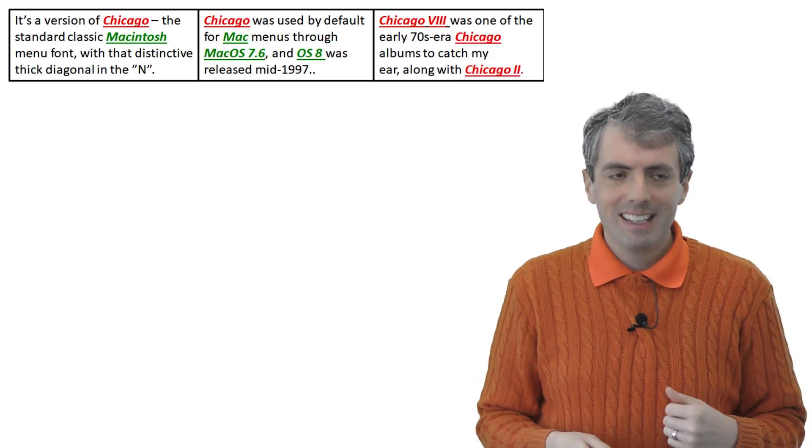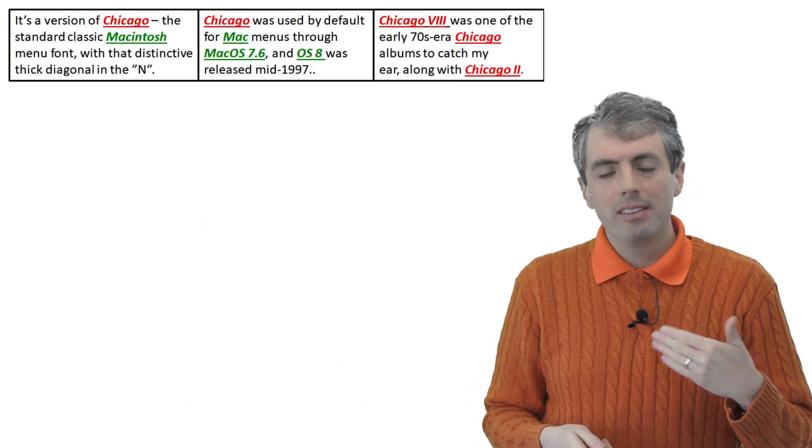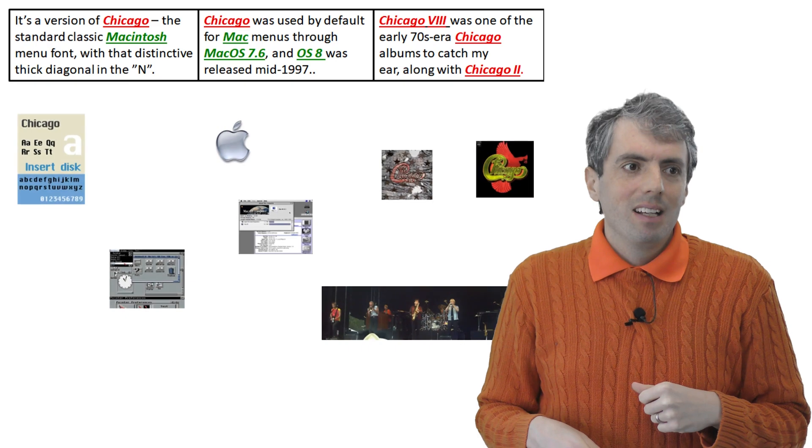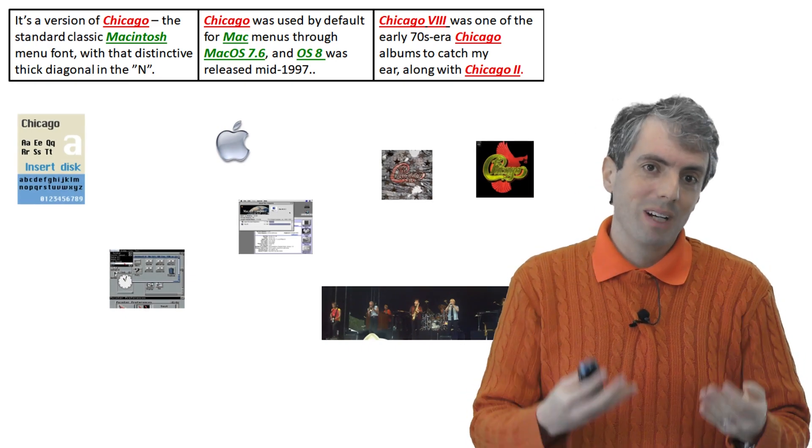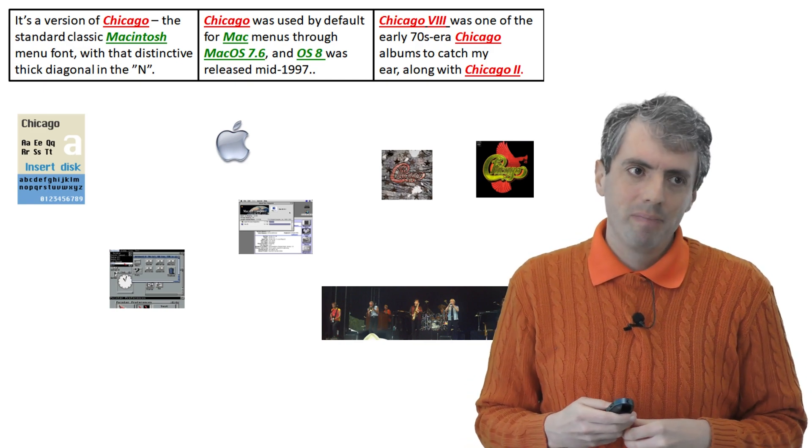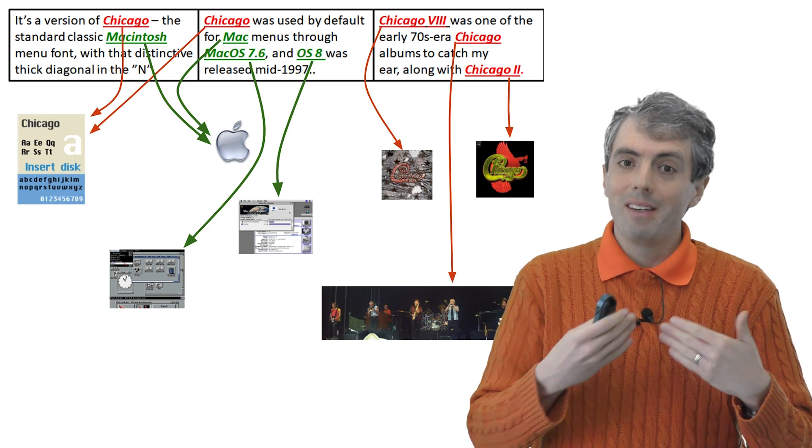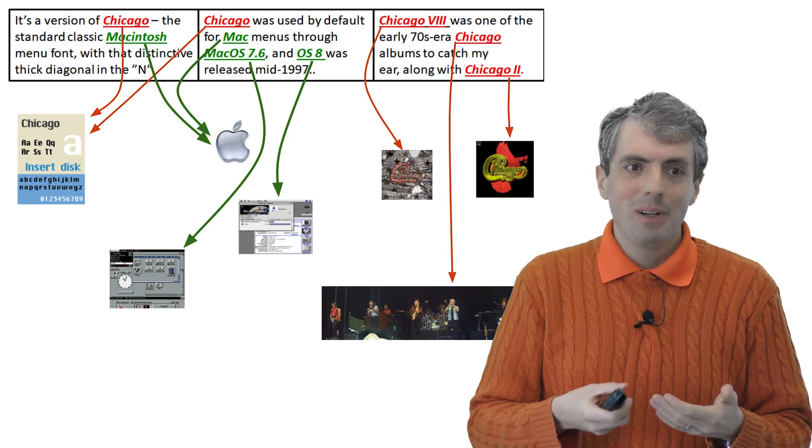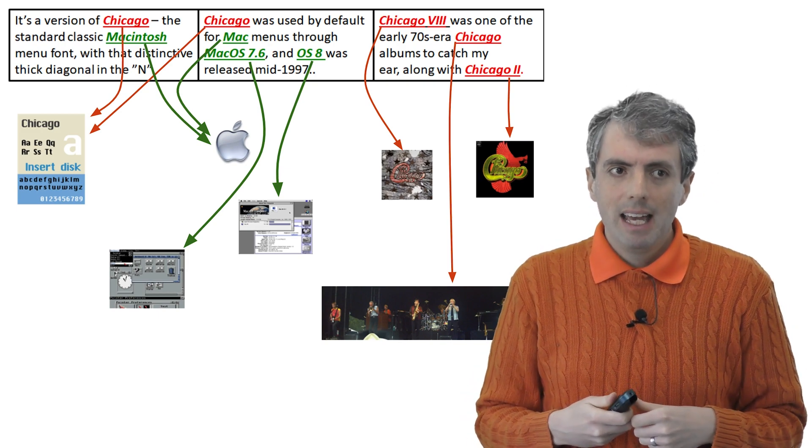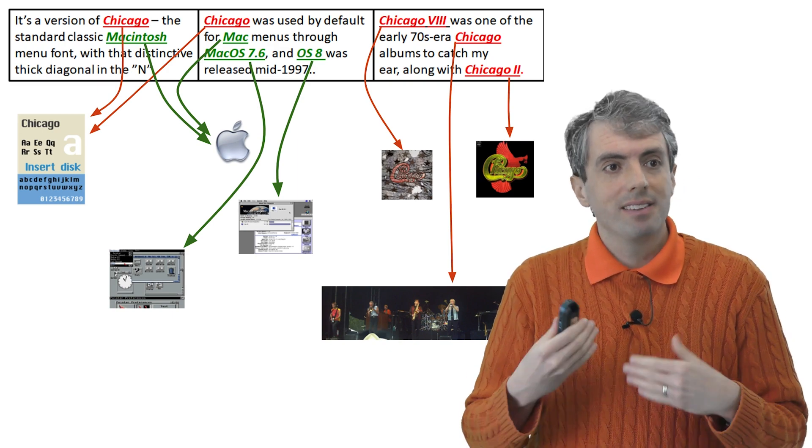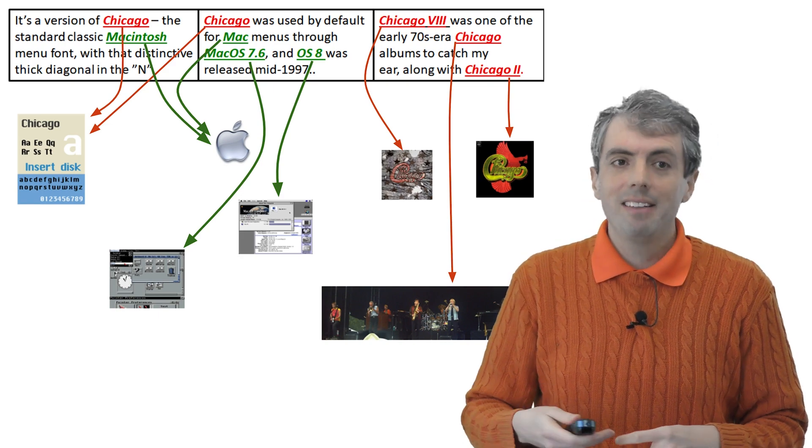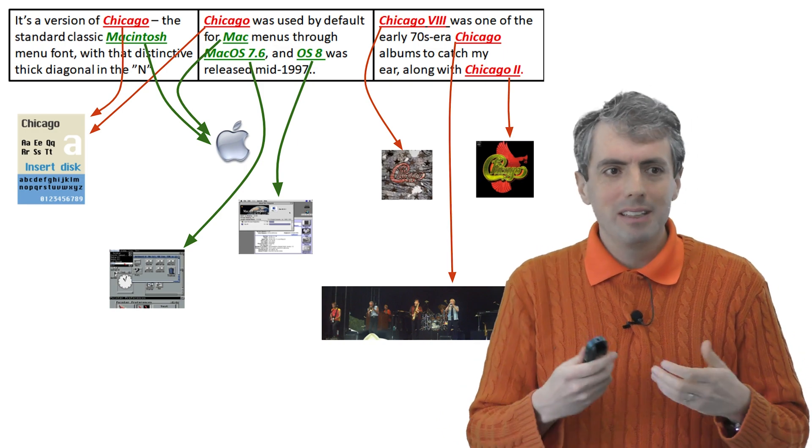We first begin with entity linking. Given entities that are mentioned in some context, we need to figure out what entities are being talked about. So here we have a bunch of strings with Chicago, and none of them refers to the city in Illinois. Some of these refer to a font, some of these refer to a band, some of these refer to an album made by the same band. There are also other entities mentioned here, such as the Macintosh Operating System, version 7 and version 8, and Macintosh more generally, released by the company Apple.